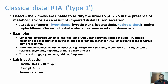In Type 1 distal RTA, kidneys are unable to acidify the urine — pH remains less than 5.5 even in the presence of metabolic acidosis — due to impaired distal hydrogen ion secretion. This condition is associated with hypokalemia, which can produce muscle weakness, hypokalemic paralysis, respiratory distress, and ECG changes. Hypocitraturia and hypercalciuria with nephrocalcinosis and renal stones are very common in chronic Type 1 RTA.